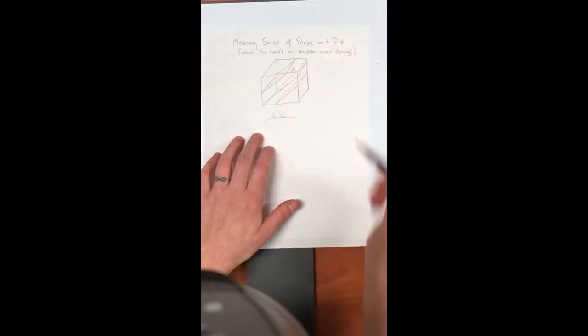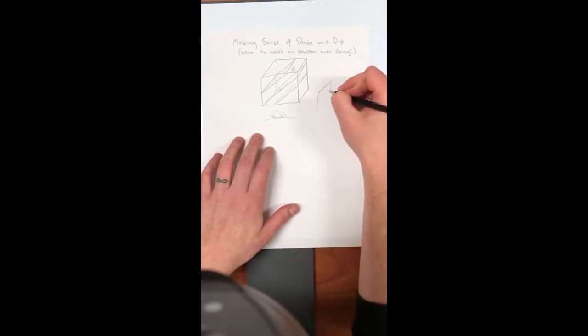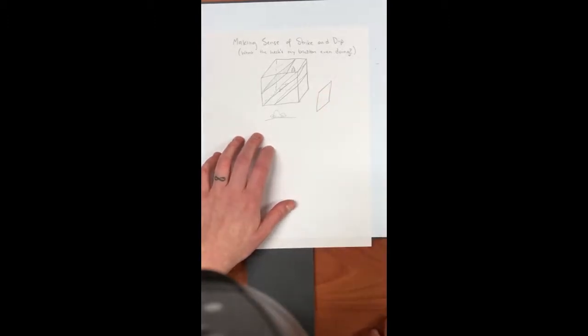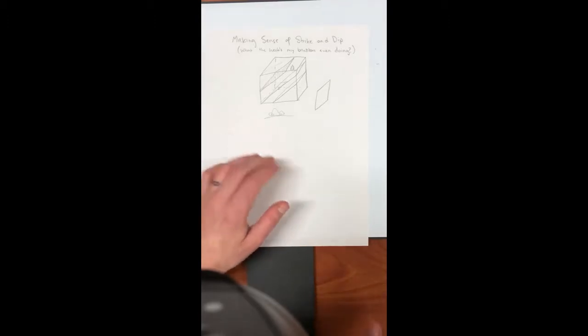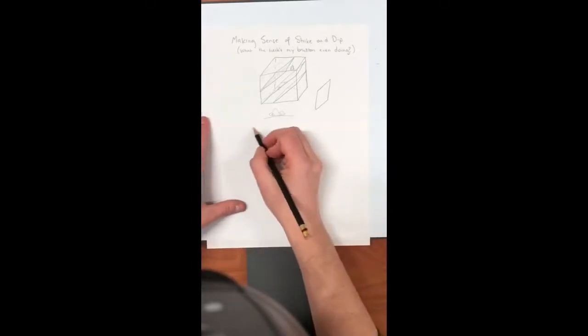Let's say this is the top of some unit that we care about and we want to just learn about that one dipping surface. That one surface going in and out of that rock unit. So now it's a plane. And you can describe planes in a few different ways, right? I'm going to sketch another plane down here, kind of more facing us.